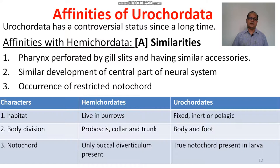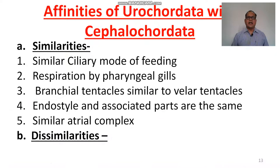Hemichordates live in burrows while Urochordates are fixed to the substratum. Body division: proboscis, collar and trunk in hemichordates; body and foot are the two divisions in urochordates. Notochord: only a buccal diverticulum is present in hemichordates — not a true notochord — but a true notochord is present in the larva of Urochordata.